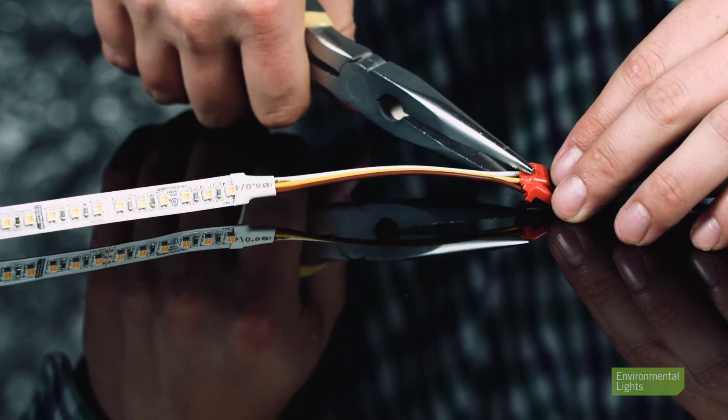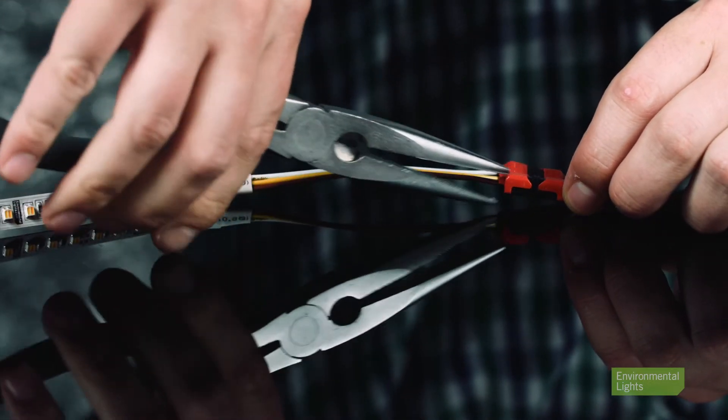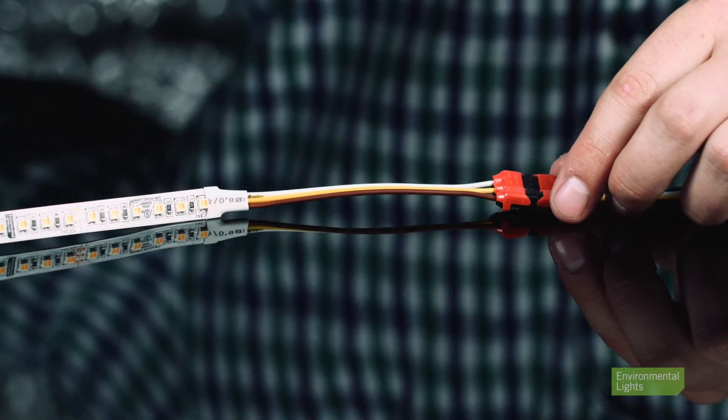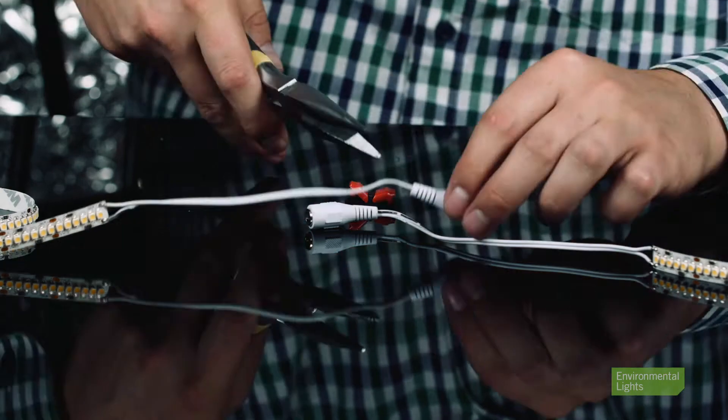Connect sections of LED strip light without barrel plugs. In situations with mismatched connectors, simply cut them off and use clip-on connectors.